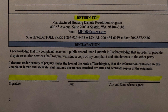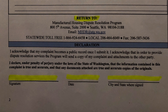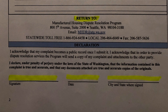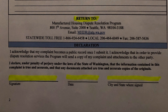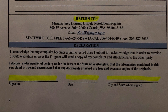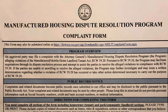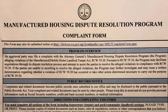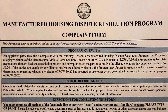The most important part of page two is the declaration: I acknowledge that my complaint becomes a public record once I submit it. I acknowledge that in order to provide dispute resolution services, the program will send a copy of my complaint and attachments to the other party. I declare under penalty of perjury under the laws of the state of Washington that the information contained in this complaint is true and accurate and that any documents attached are true and accurate copies of the originals. Please remember to sign, date, and put the city and state where you signed the form — it's very important. You have now completed your Manufactured Housing Dispute Resolution Program Complaint Form. Never be afraid to file your complaint. The state of Washington is there to help you.